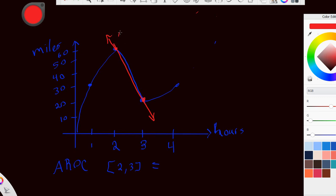Now, notice that this point is going to be the point (2, 60), and this is going to be the point (3, 20). So when I find the average rate of change, I just have to find the slope between these two points.